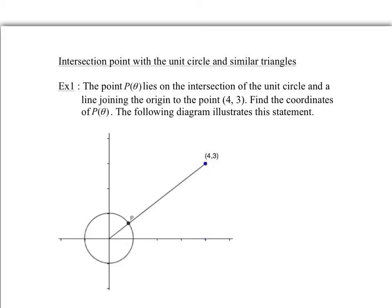Last part of the lesson: what if we had a terminal arm of an angle where the point is bigger than the unit circle? Imagine this is the unit circle with radius 1, and we have a terminal arm that crosses the unit circle and passes by the point 4, 3. The point P theta lies on the intersection of the unit circle and the line joining the origin and the point 4, 3. Find the coordinates of that intersection point.